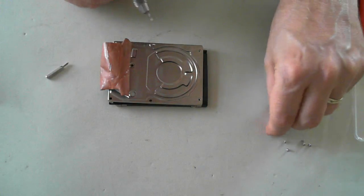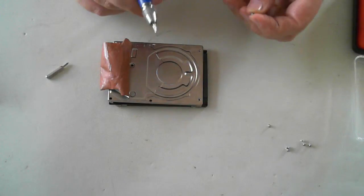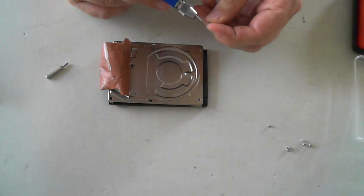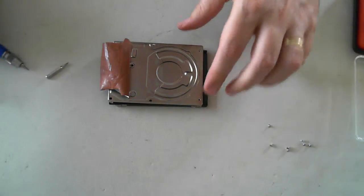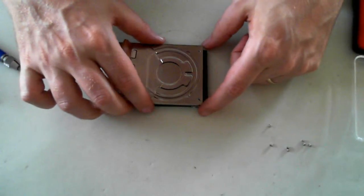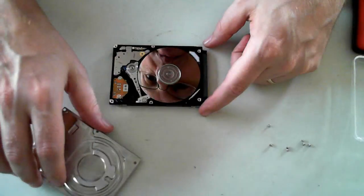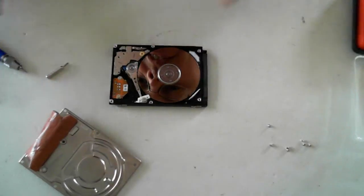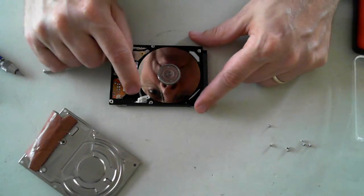Now the screws themselves are Torx screws, so you need a Torx head screwdriver. If you don't have them you won't be able to get in. Once all the screws are removed you can take the cover off and see we've got the platter here and the drive heads here.